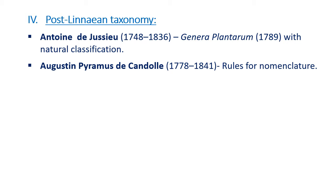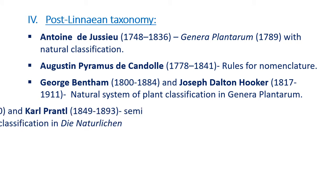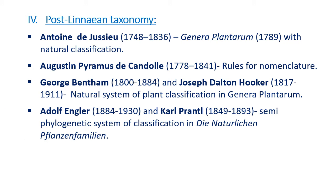In the post-Linnaean era, de Jussieu published Genera Plantarum with a natural system of plant classification. A.P. de Candolle published for the first time the rules of nomenclature. George Bentham and Joseph Dalton Hooker published a natural system of plant classification in Genera Plantarum, which is popular even today. Adolf Engler and Karl Prantl published a semi-phylogenetic system of classification in their classical work Die Natürlichen Pflanzenfamilien.